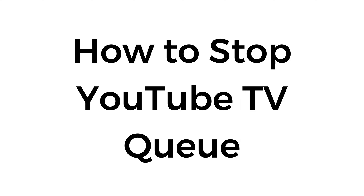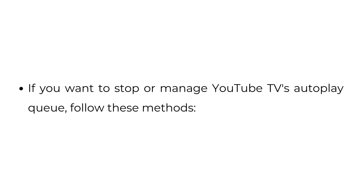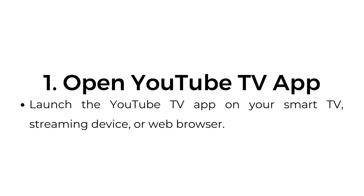How to stop YouTube TV queue. If you want to stop or manage YouTube TV's autoplay queue, follow these methods. Method number one: disable autoplay. Open the YouTube TV app — launch it on your smart TV, streaming device, or web browser.